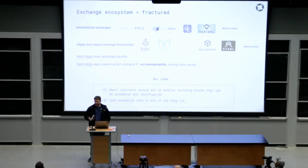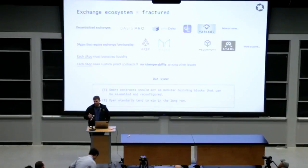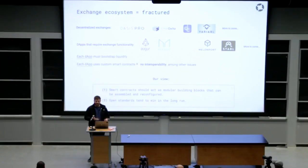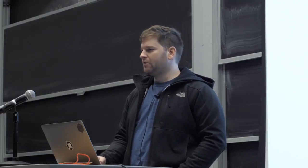The problem we identified early on is that every single one of these different decentralized applications and decentralized exchanges were creating their own proprietary and custom smart contracts for exchange. This creates quite a few issues. Since each different dApp was creating their own custom smart contract for exchange, every single dApp would have to bootstrap liquidity from scratch. Worse still, end users would have to go through a variety of different configuration processes, learning curves, and expose their valuable digital assets to a variety of different smart contracts that may or may not be secure. And finally, there is no interoperability between any of these different exchange implementations.